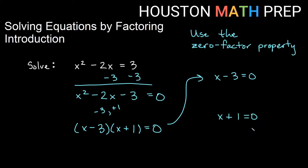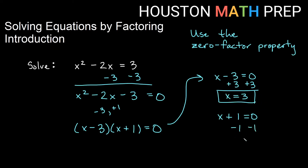These are basic one-step problems. For (x minus 3) equals zero, I add 3 to both sides, giving me x equals 3. For (x plus 1) equals zero, the opposite of plus 1 is minus 1, so I subtract 1 from both sides and get x equals negative 1 as my second answer.